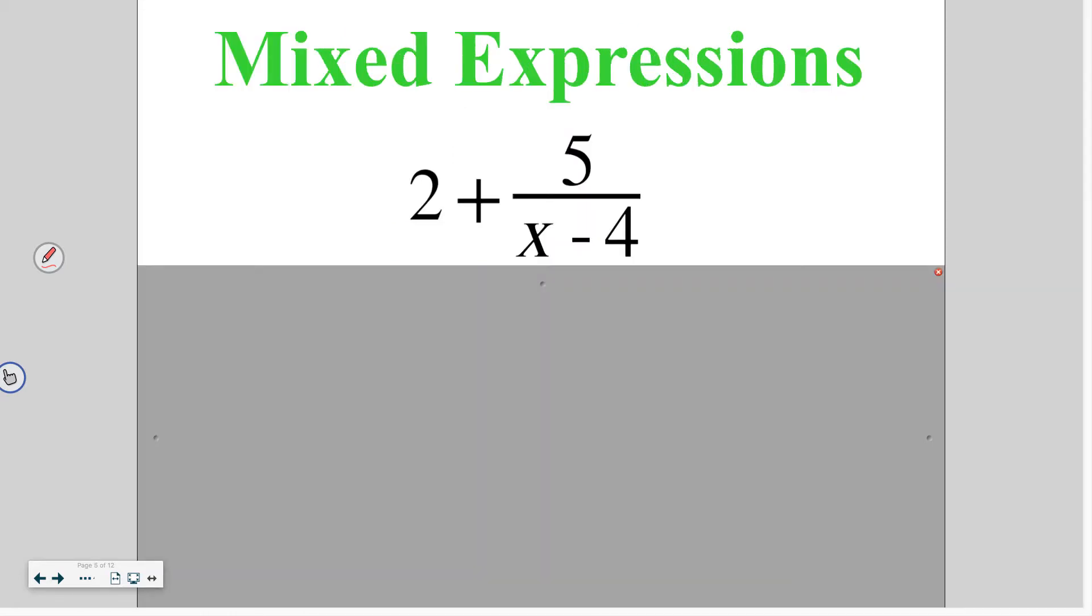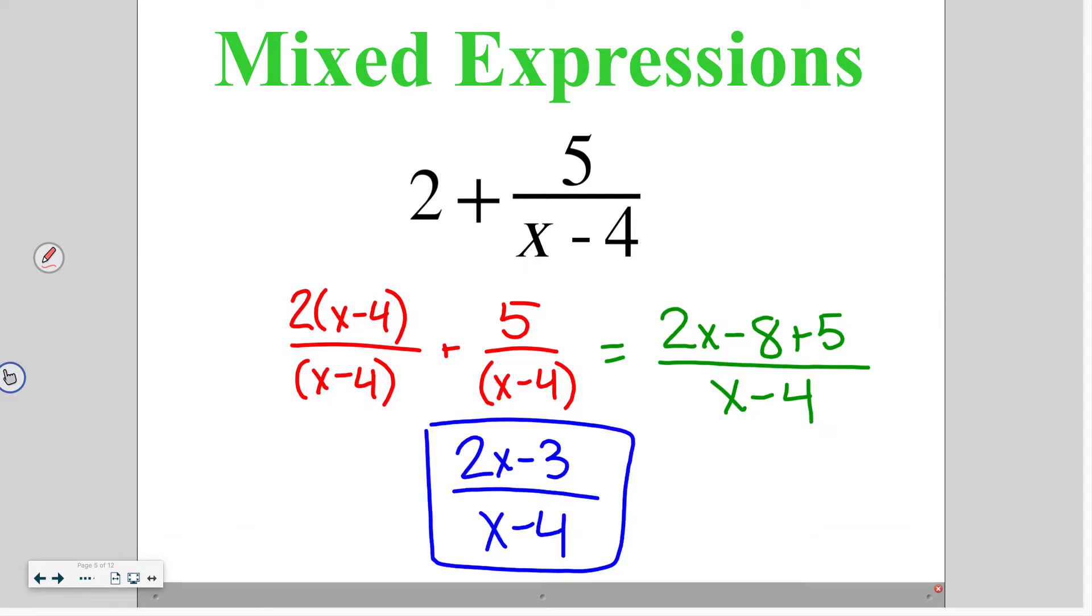Go ahead and try this one on your own. Common denominator of x minus 4. Up top we distribute and we get 2x minus 8. And then we add on that 5 from the second expression. Negative 8 plus 5 gives me the minus 3 and there is nothing else to simplify.